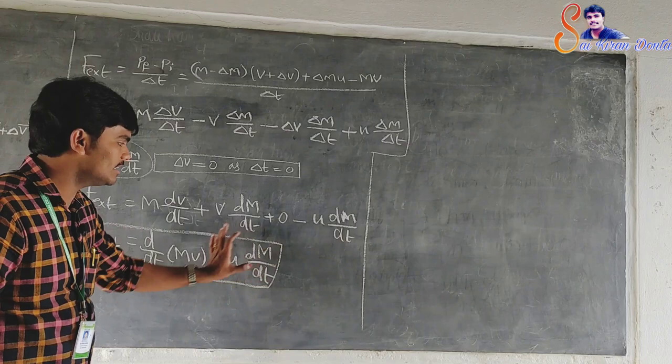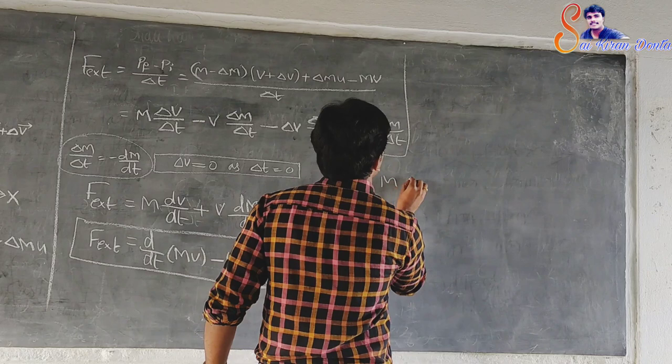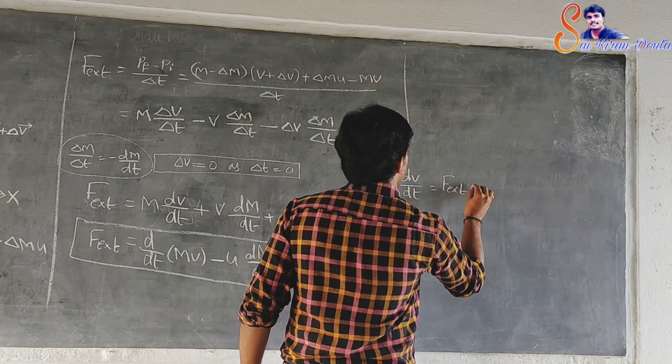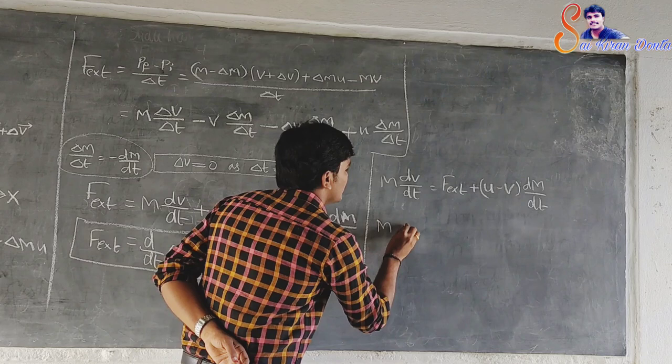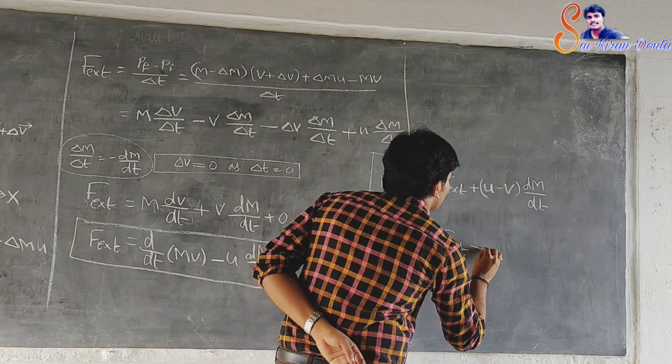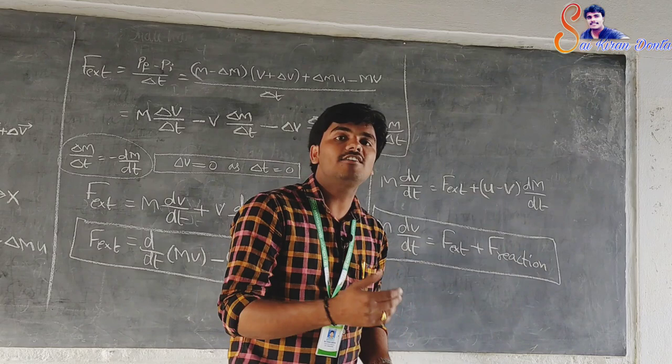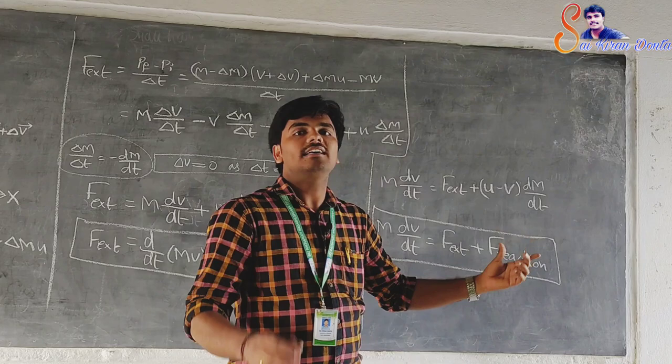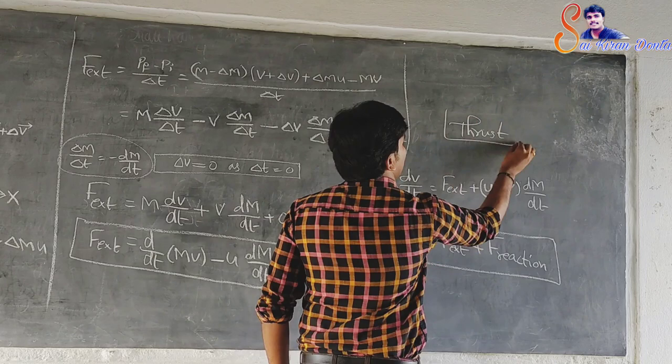The equation is M dV by dt equals F external plus (U minus V) dM by dt. The last term is the rate of change of momentum when the mass is leaving from it. This can be regarded as the reaction force exerted on the system by the leaving mass. For a rocket, this term is called thrust.